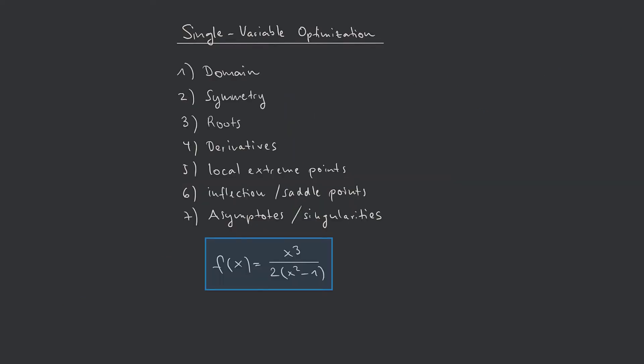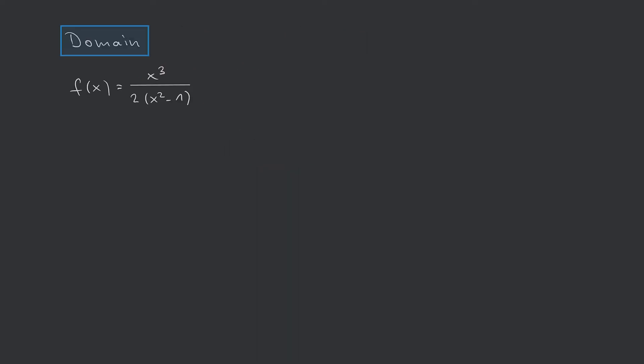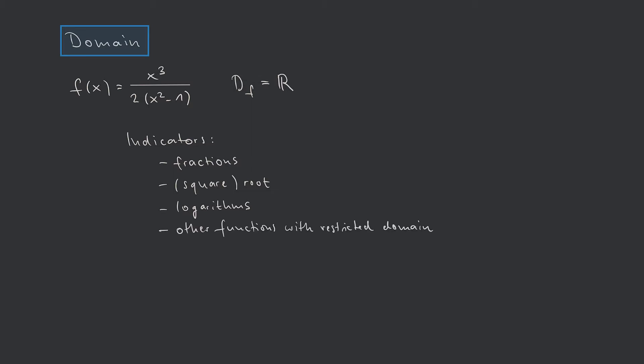Let us start with identifying the domain. The method is to first assume the function is defined for all real numbers, writing D(f) = ℝ. Then we check if there are numbers where the formula is not defined. Typical indicators are fractions, square roots, logarithms, and other elementary functions with restricted domain. Obviously, we have a fraction in this case.